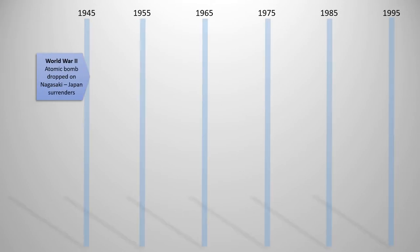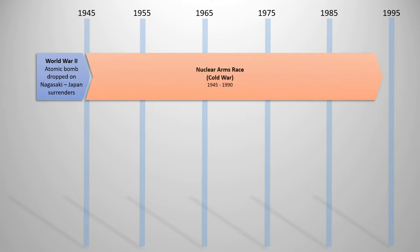At the end of World War II, in 1945, the war with Japan ended when the atomic bomb was dropped on Nagasaki and Japan surrendered. A number of historically significant things happened here leading up to the internet. First of all, the nuclear arms race began after that second atomic bomb was dropped, and it went on all the way until 1990, playing a big part in the development of the internet.